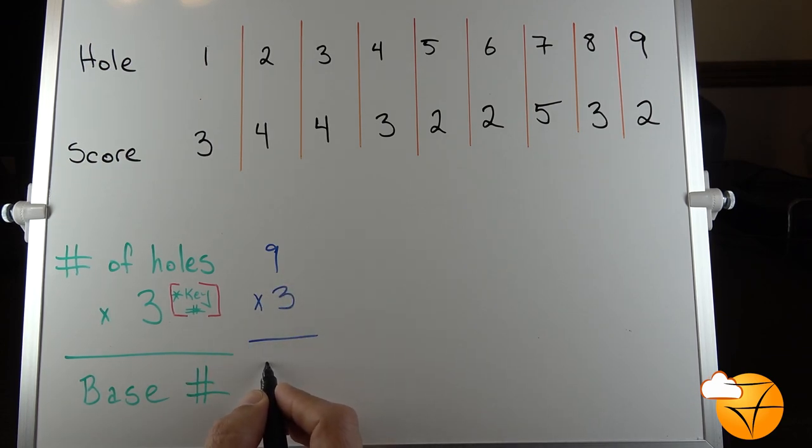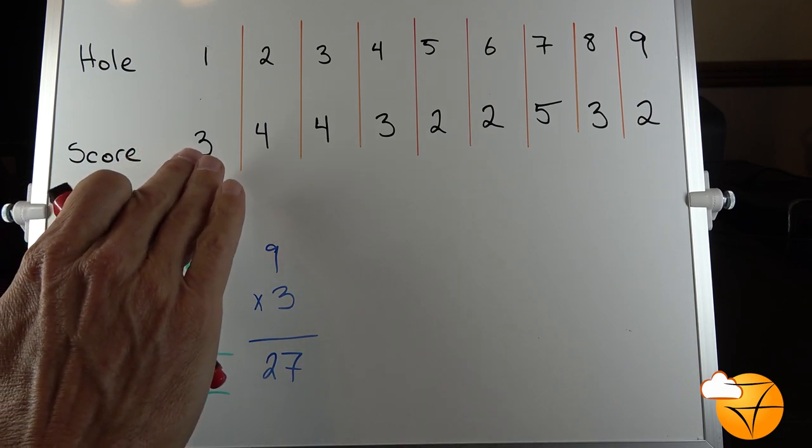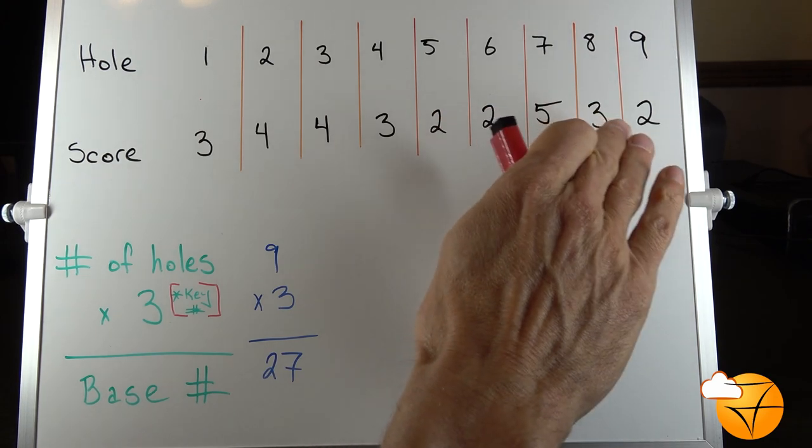Don't worry about the terms 'key number' and 'base number'—this is just for the example. 27 is the base number. When we're looking at the scorecard, we're basing everything off the number three. That's why that's the key number. We are going to ignore any score with the number three on it.